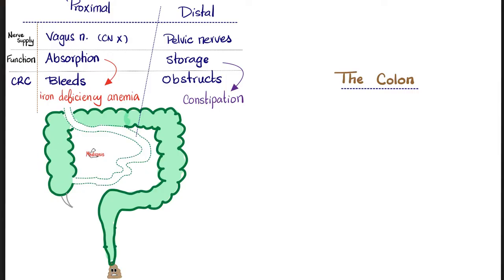Anatomically, the ascending colon is usually wider in diameter, but the descending colon is usually narrower. That's why if a cancer develops in the descending colon, it's more likely to obstruct — causing constipation, a very common symptom of colorectal cancer — and the caliber of your stool will change because of the obstruction. The proximal colon, the hero of absorption, is wide with tons of blood vessels, and that's why it's more likely to bleed as a colorectal cancer, leading to iron deficiency anemia.